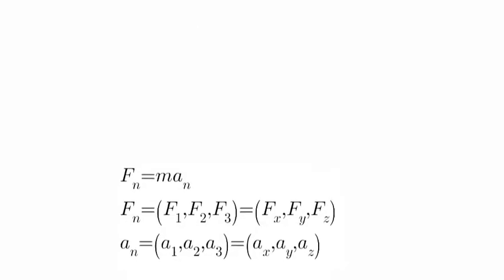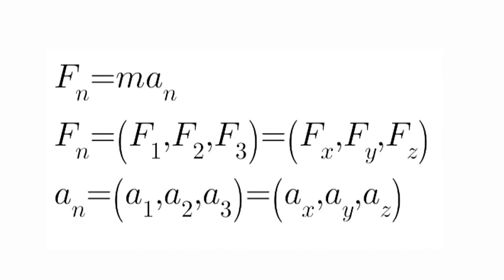we have introduced a tensor which, on putting the value of n, gives us the respective coordinates. So instead of writing all these three equations, we can simply write that the nth component of F is equal to mass multiplied by the acceleration in the nth dimension.